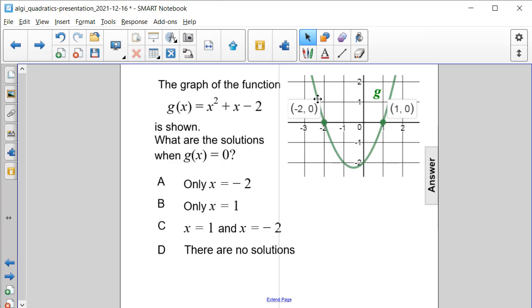The graph of the function g of x is equal to x squared plus x minus 2 is shown. What are the solutions when g of x is equal to 0?